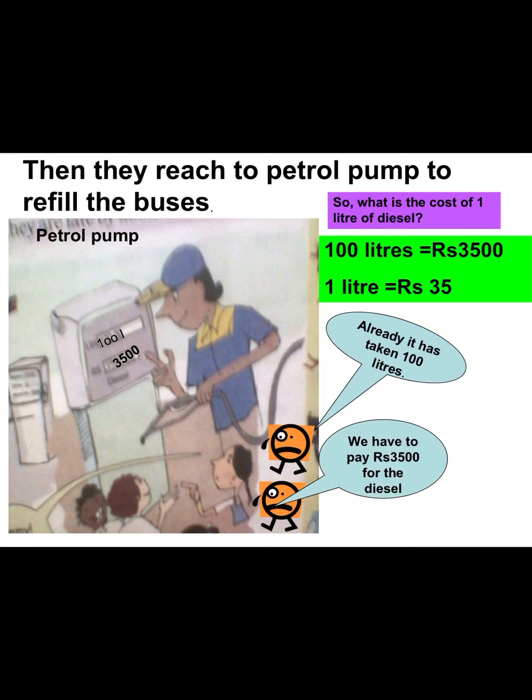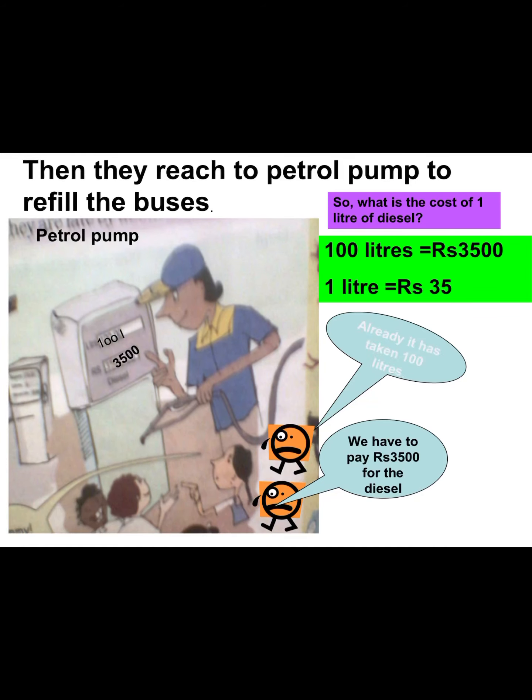Chintu is speaking: already it has taken 100 liters — such a big tummy it has! Nehalata is counting the amount they have to pay: we have to pay Rs. 35,000 for the diesel. Now, can you tell children which transports take diesel and which take petrol? Make a report in your copy and show me afterwards. So, if 100 liters equals Rs. 35,000, what is the cost of 1 liter? It is Rs. 35.